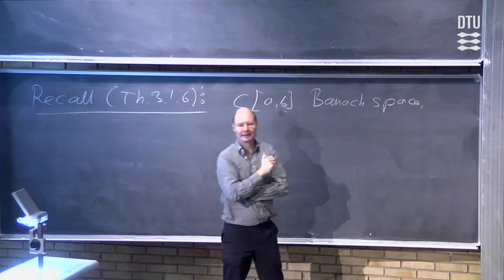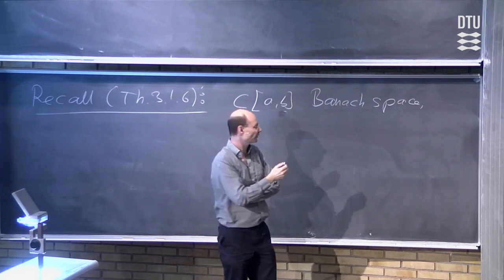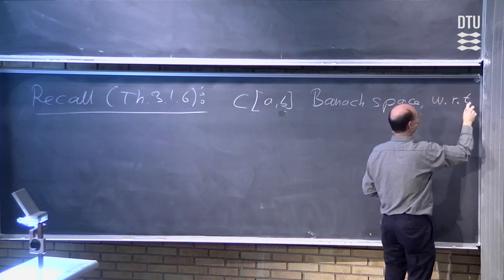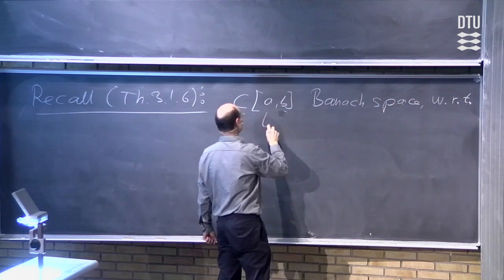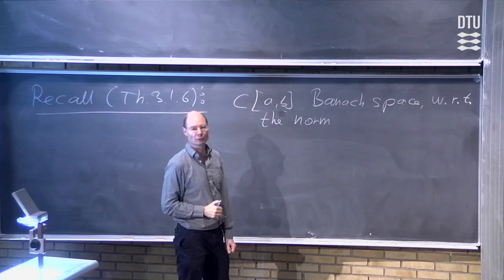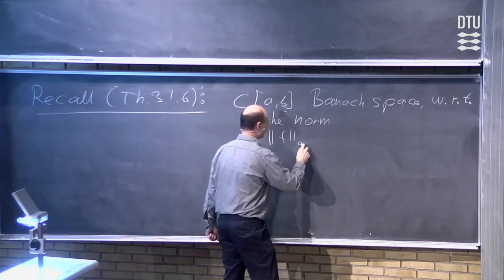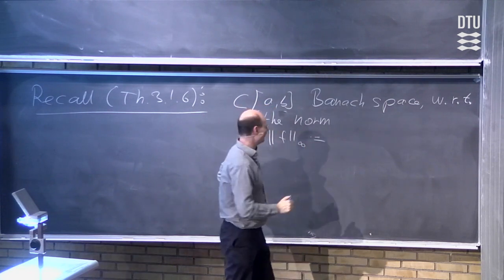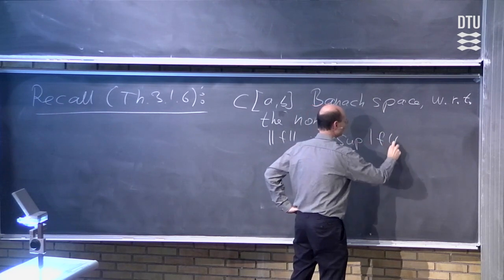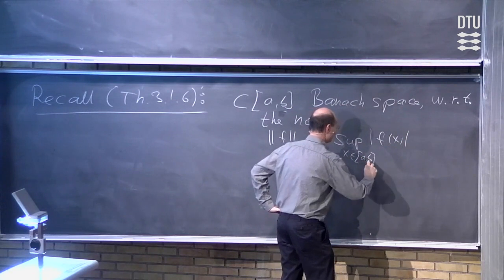Remember, when you say that something is a Banach space, you always need to specify what norm you are thinking about. The one we looked at was the supremum norm. So we looked at the norm of f infinity, and this is defined by taking the supremum of absolute values of f of x, where x runs in the interval a to b.